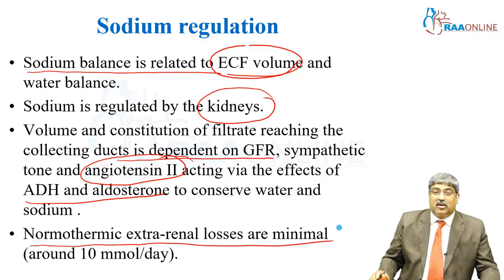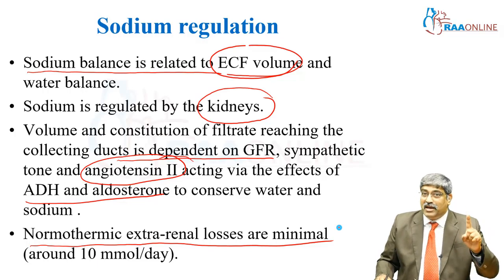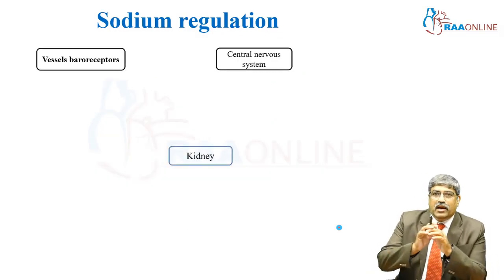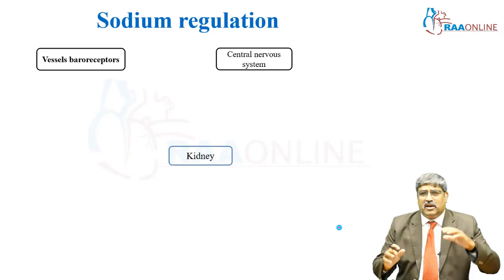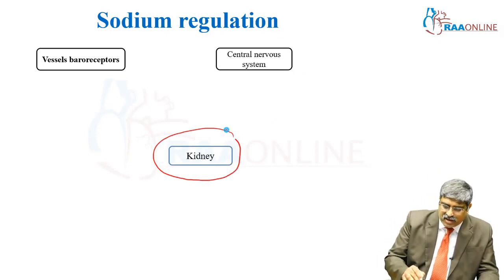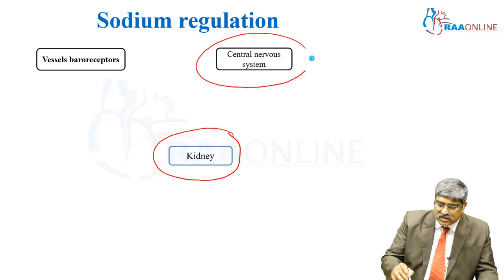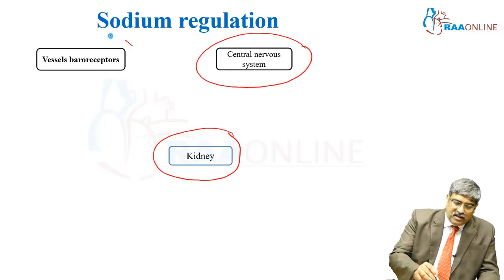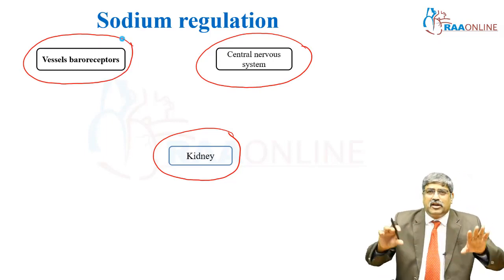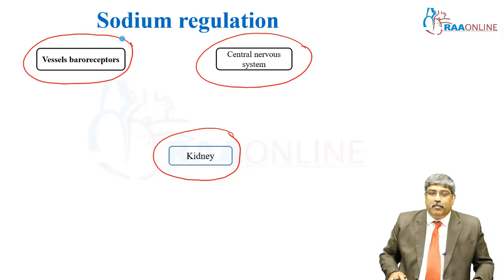The normothermic extra-renal losses are minimal, around 10 ml per day, but renal losses are around 100 millimoles per day. The three main organs concerned with sodium homeostasis are the kidney, which is the main regulator of sodium balance, followed by the central nervous system and the vascular baroreceptors, which are related to the sympathetic system and volume balance.